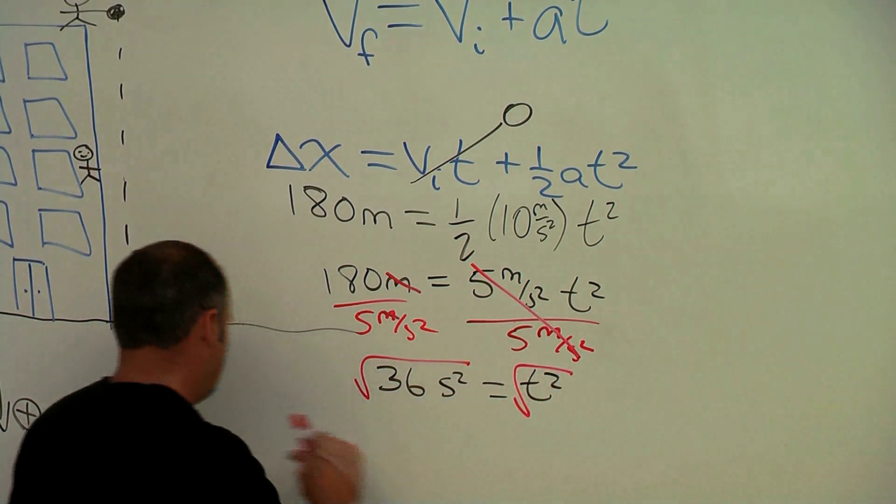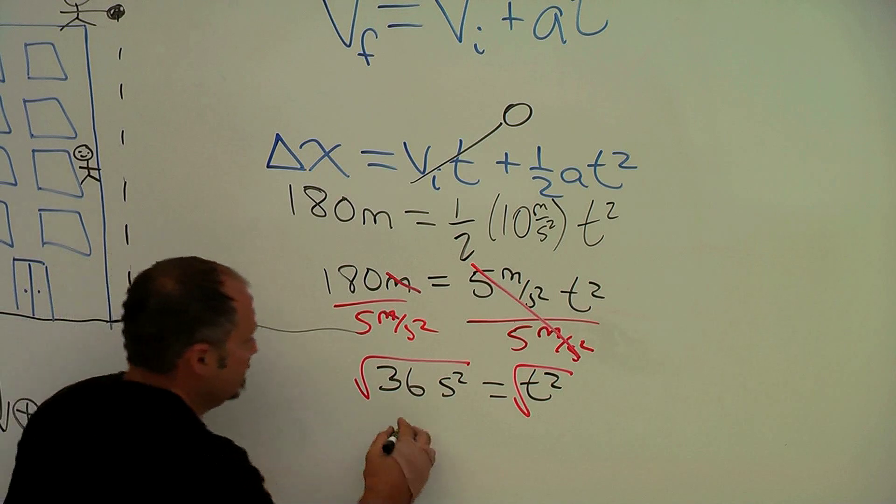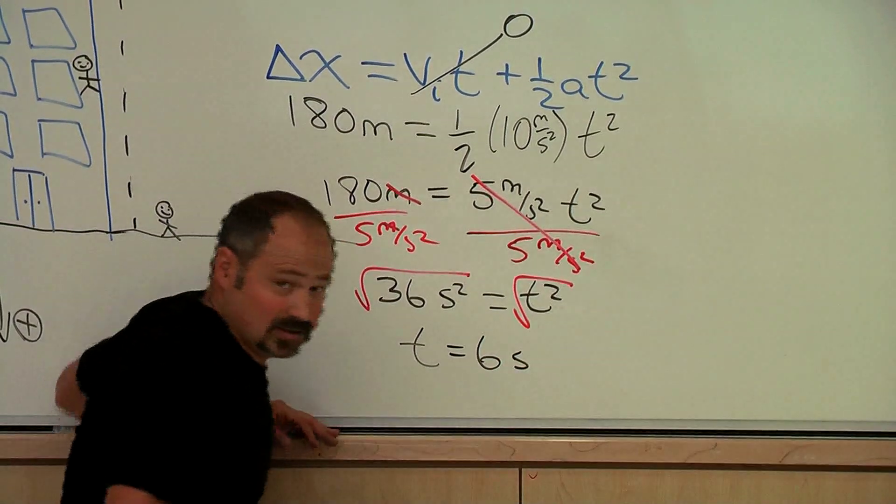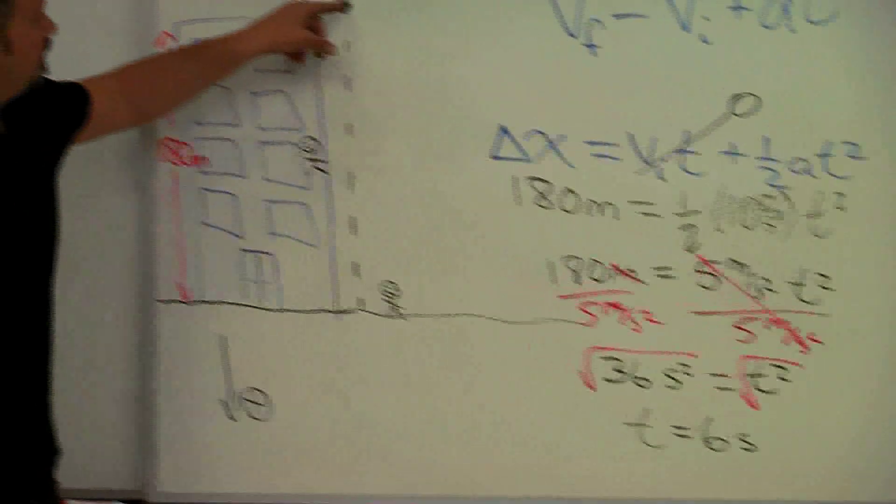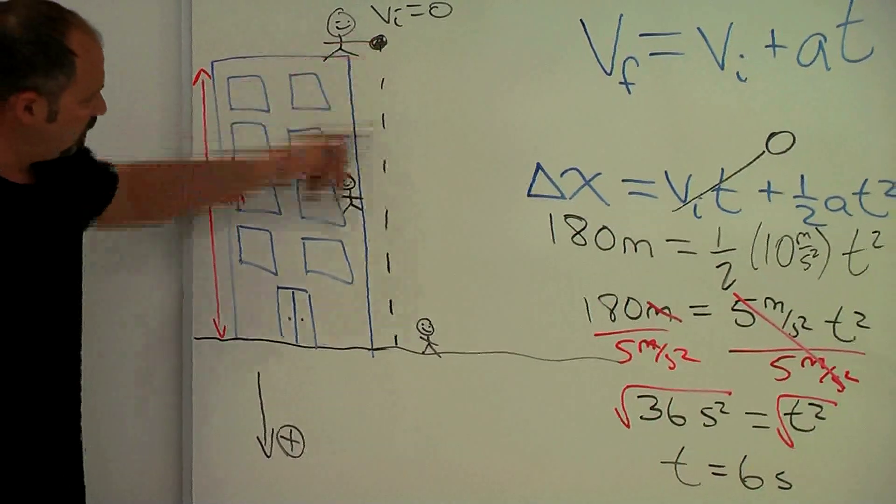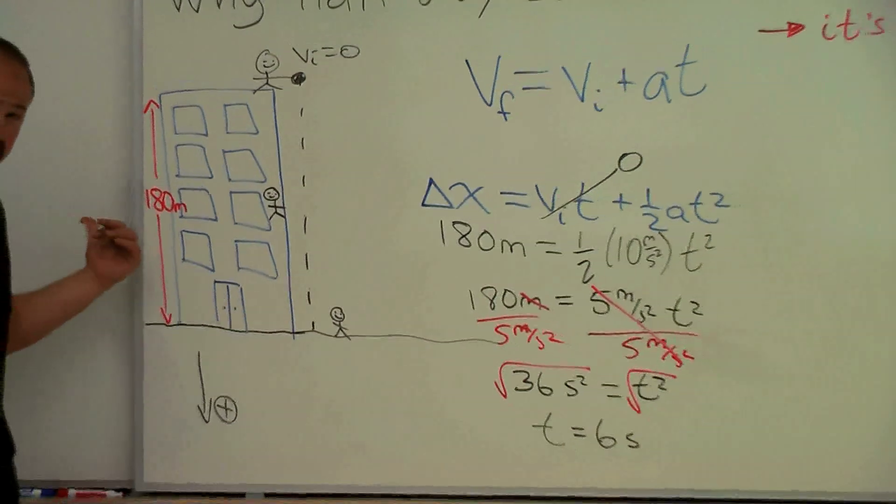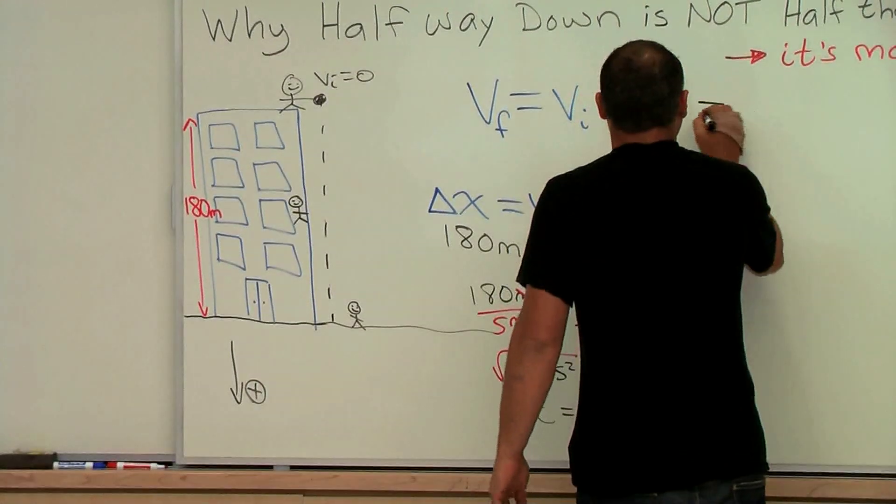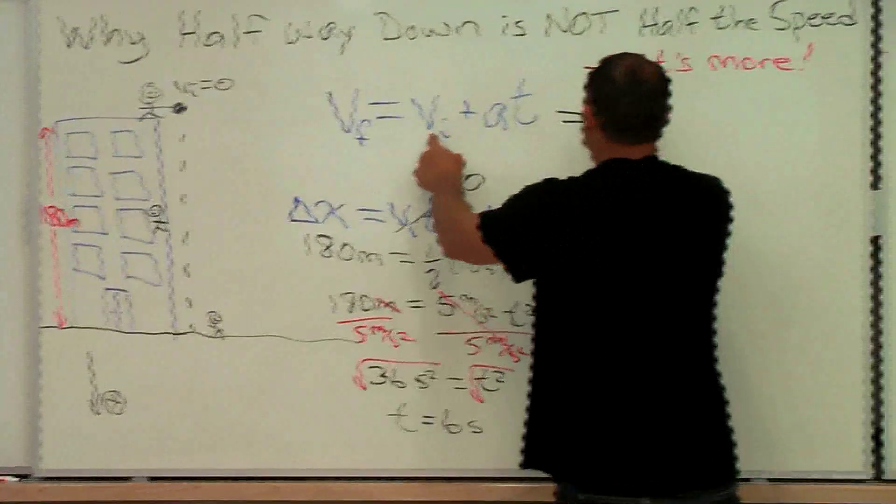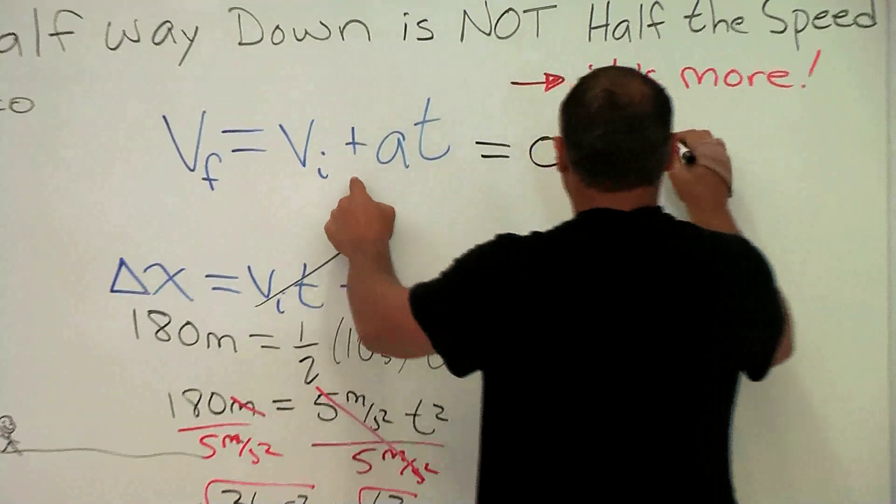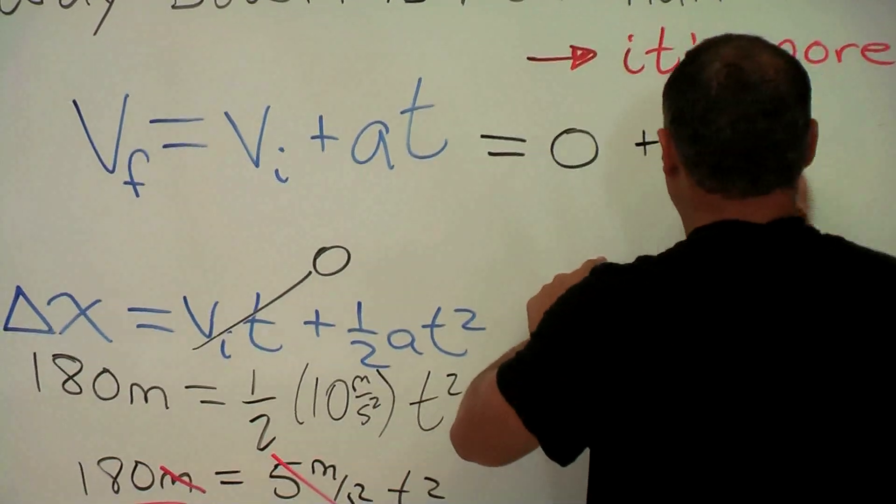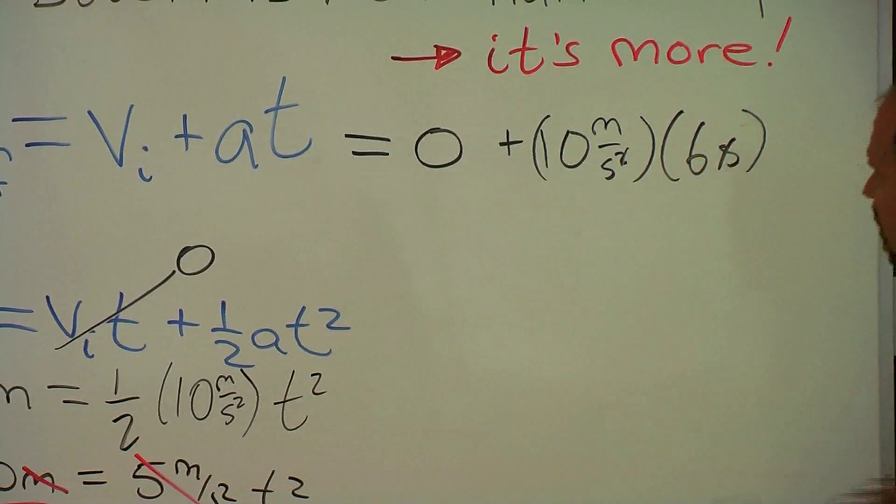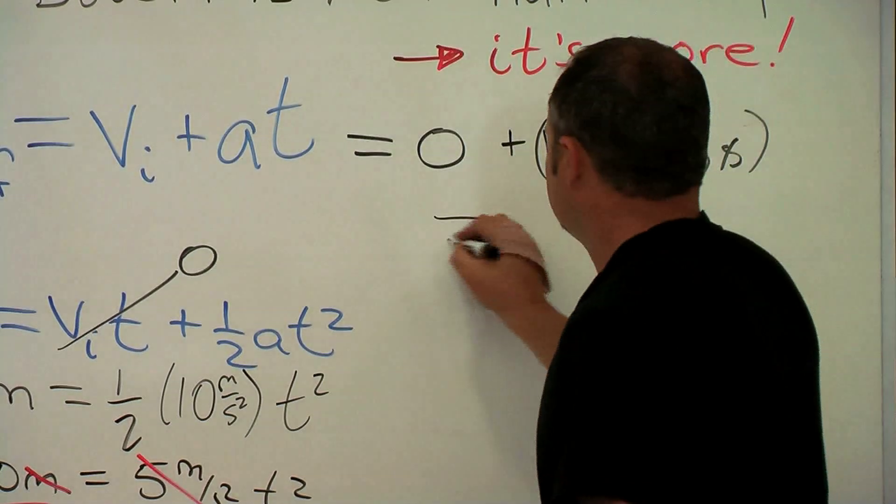I get that t is equal to six seconds. So it'll take six seconds for this ball to come all the way down this distance of 180 meters. Plugging that in, I get initial velocity zero plus 10 meters per second squared times six seconds. These guys cancel, 10 times 6 is 60, so I get 60 meters per second.